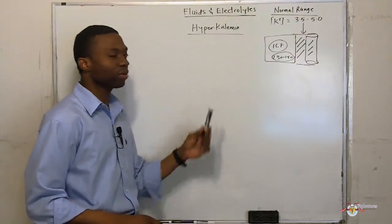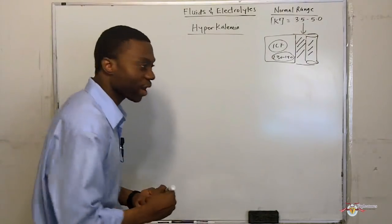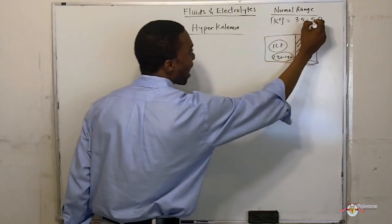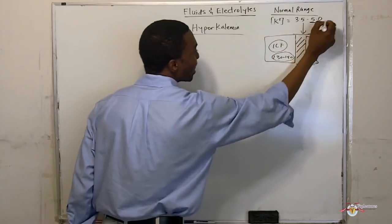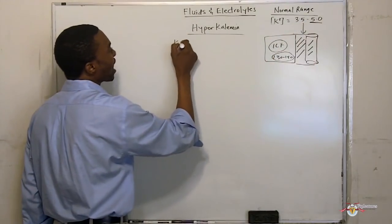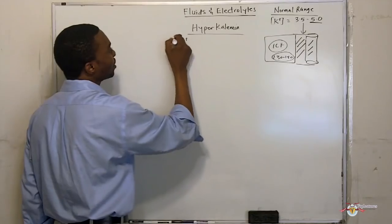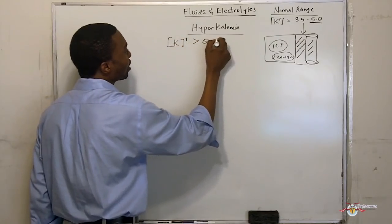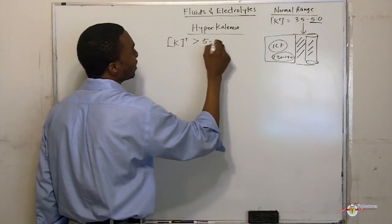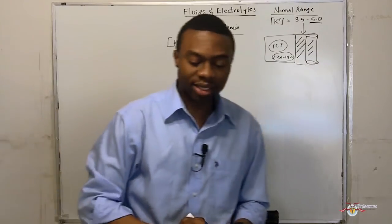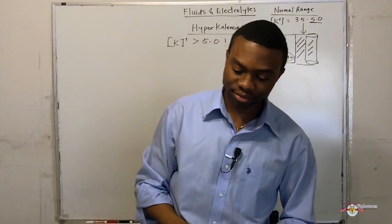What is the definition of hyperkalemia? Well, if the highest range you can get is 5.0, when potassium concentration is greater than 5.0, that means you have hyperkalemia.